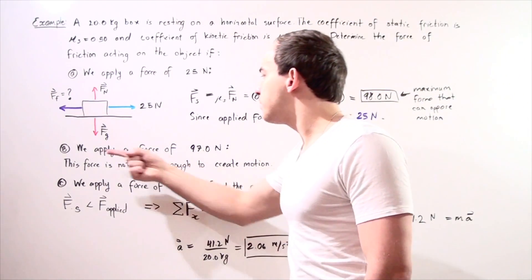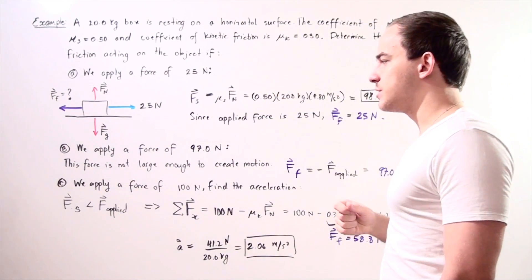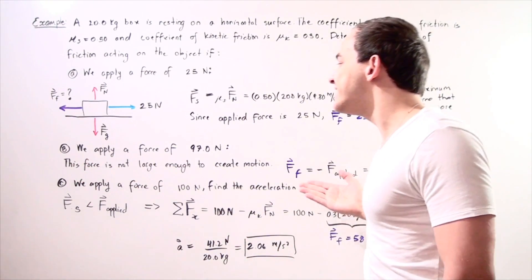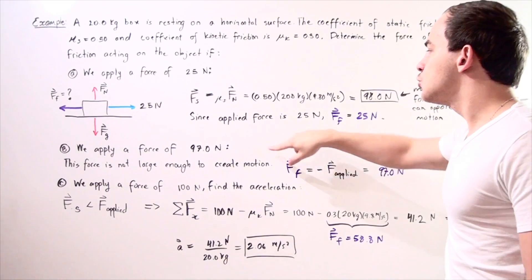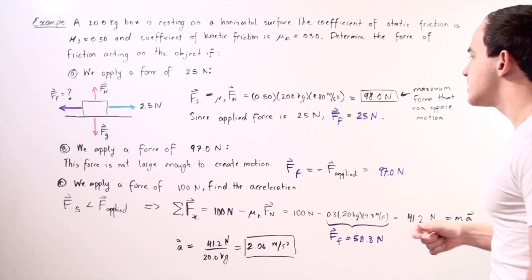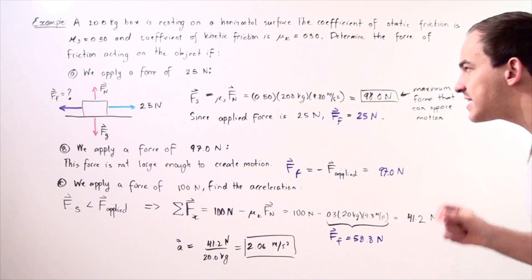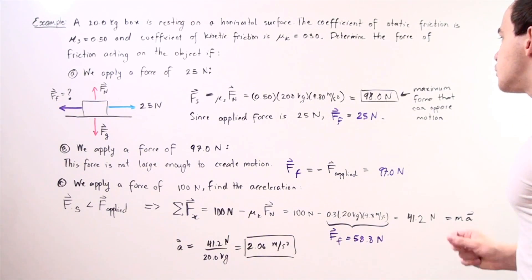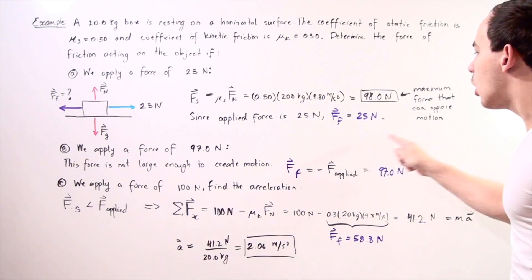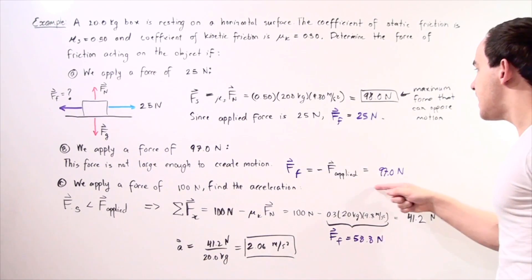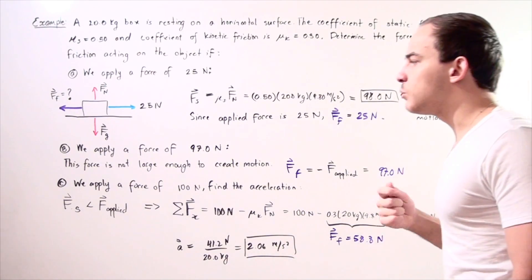What about if we apply a force of 97 newtons? Notice this force, even though it's larger, it's still not large enough to create motion because if we apply a force of 97 newtons and the maximum force of friction due to static friction is 98 newtons, that means it's still not large enough and our frictional force will have the same exact magnitude but will point in the opposite direction.